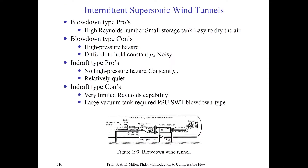Intermittent blowdown tunnels use high Reynolds numbers and a small storage tank, making them easy to operate. Whenever you have supersonic flow you want to remove humidity from the air, because as pressure drops it may fall below vapor pressure and you'll get water in your test section — which corrodes the tunnel. The good things about blowdown tunnels are high Reynolds number, small storage tank, and low cost, so you often see small supersonic wind tunnels at universities being blowdown types. There are very few universities with a continuous recirculating tunnel.